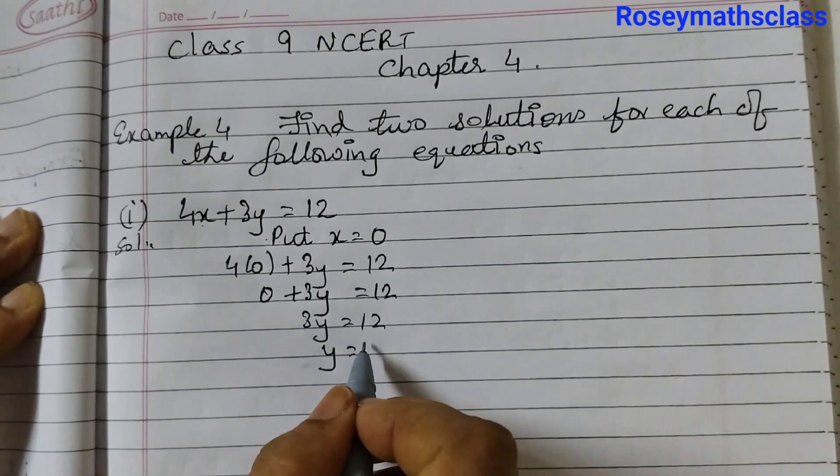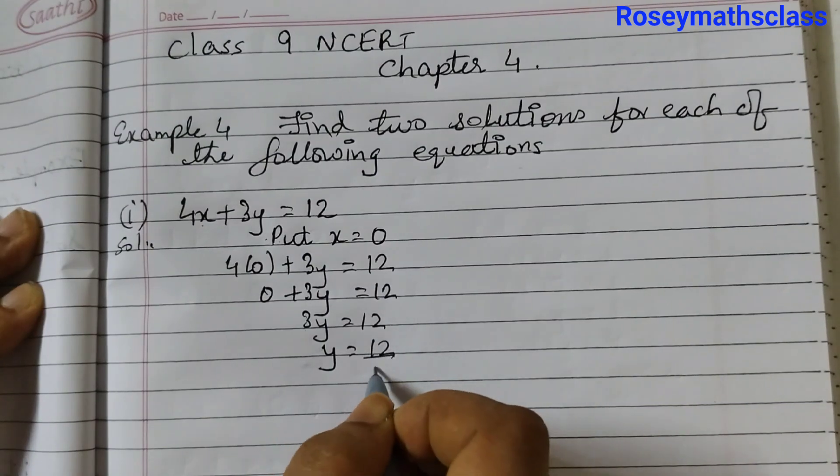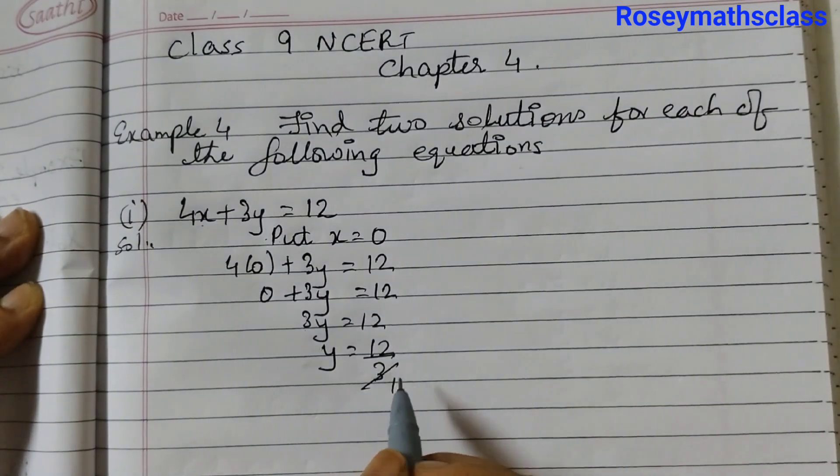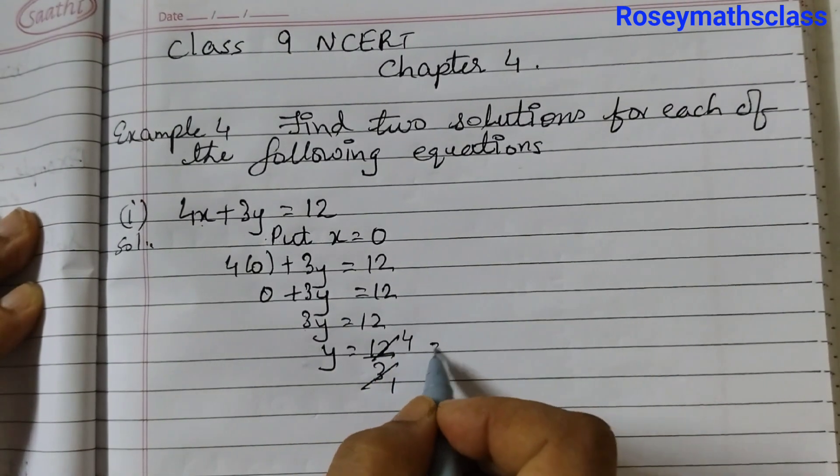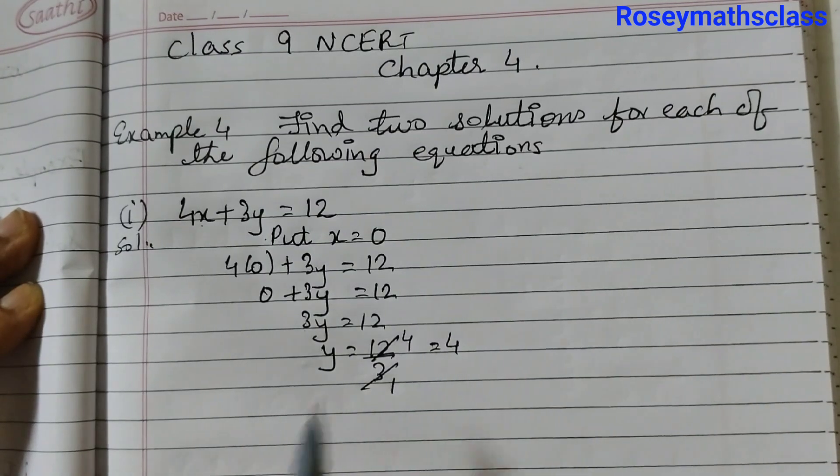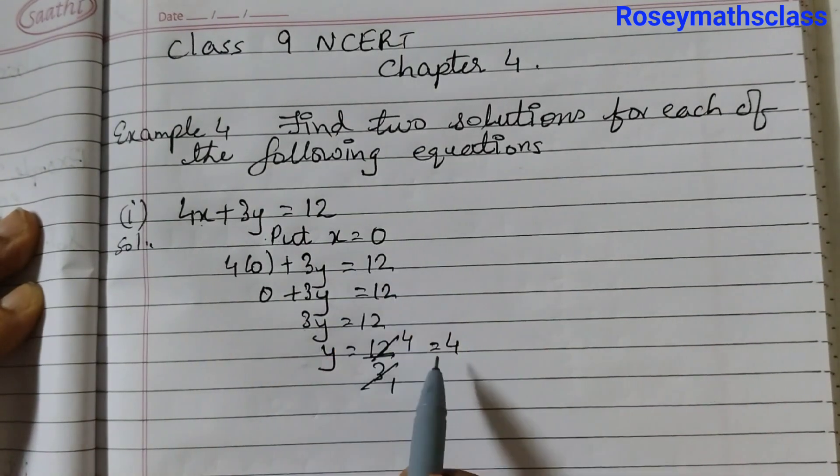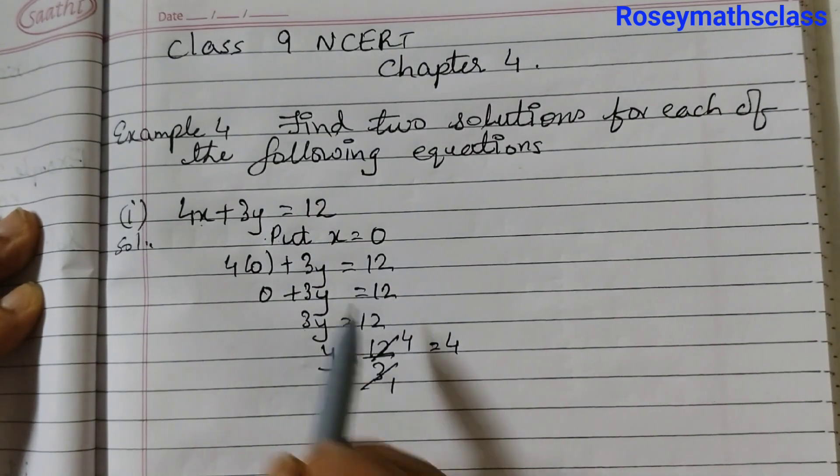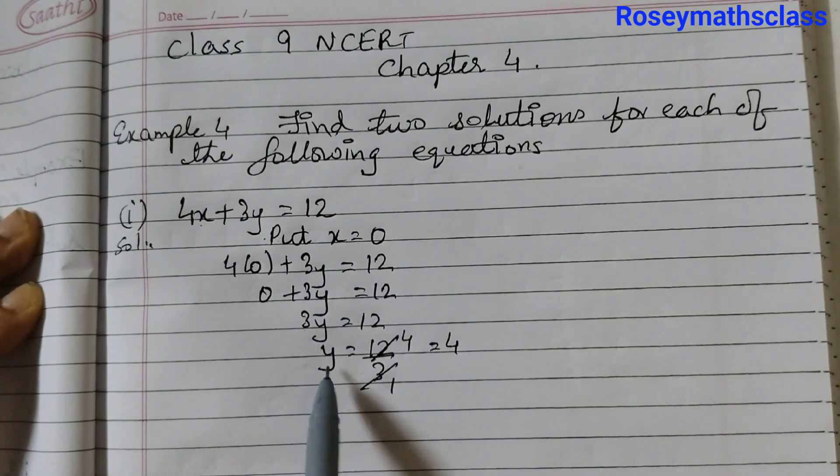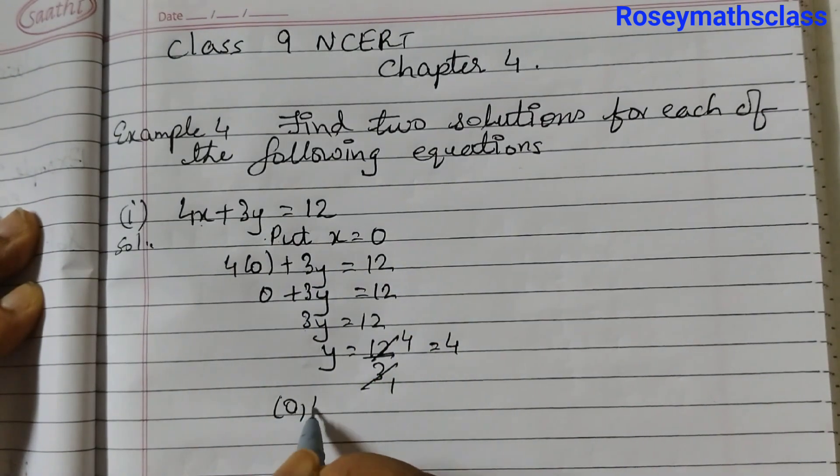Y is equal to, take 3 to this side. So 12 divided by 3, 3 fours are 12, y is 4. So one of the solution is 0, 4 and we always write the x value first and then the y value. So 0 comma 4.